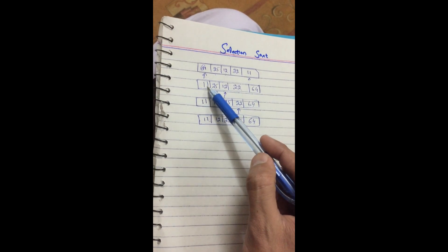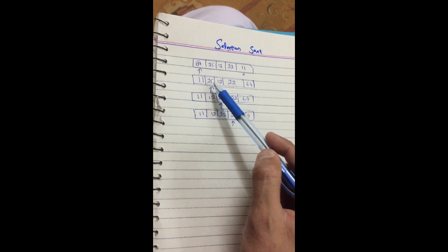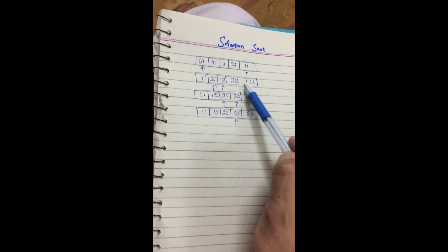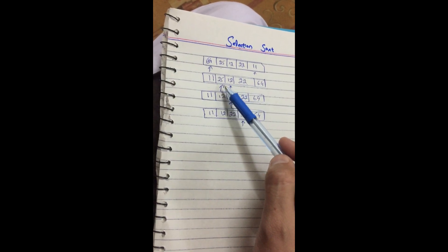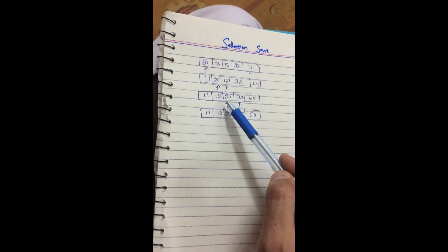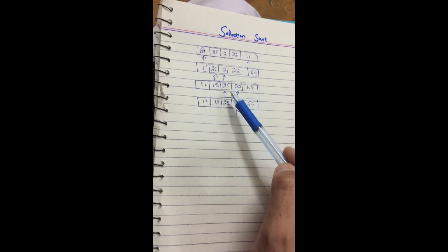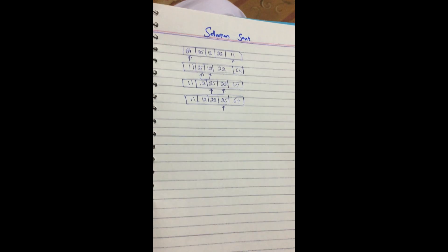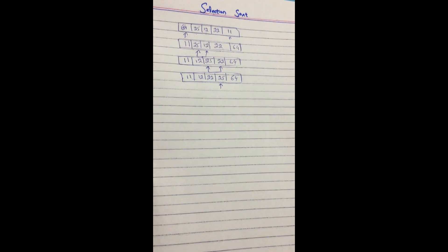The first element is already the minimum value. We again check which is the minimum value in the remaining array, find that value, swap it with the counter position, and repeat this process until the whole array is sorted. Now let's see the pseudocode.